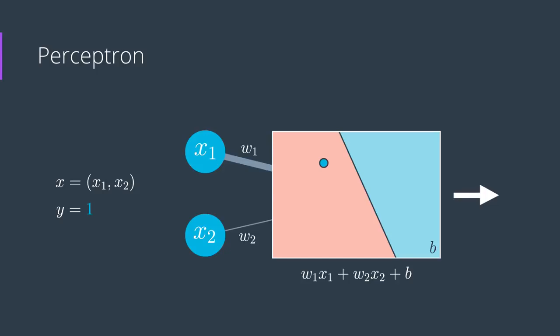Now what the perceptron does is it plots the point x1, x2 and it outputs the probability that the point is blue. Here, since the point is in the red area, then the output is a small number since the point is not very likely to be blue. This process is known as feedforward.